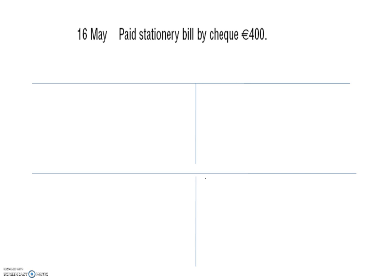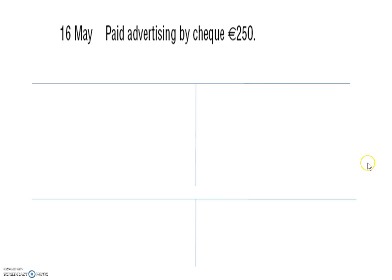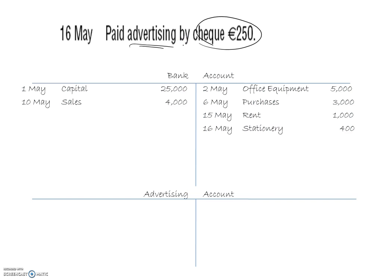16th of May: paid stationery bill by cheque — a new expense requiring a stationery account. We credit the bank and debit the stationery account. Also on the 16th of May: paid advertising by cheque. Advertising is another expense, so we open an advertising account. As a general rule, open up different accounts for every different type of expense — if in doubt, open a new account. Money coming out: credit the bank and debit the advertising account.